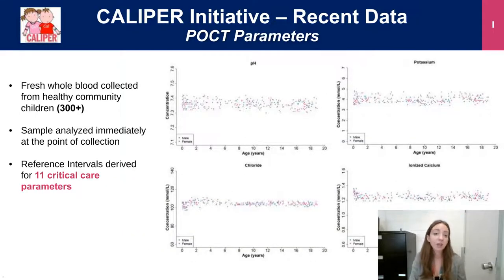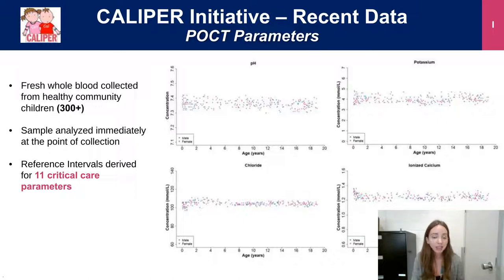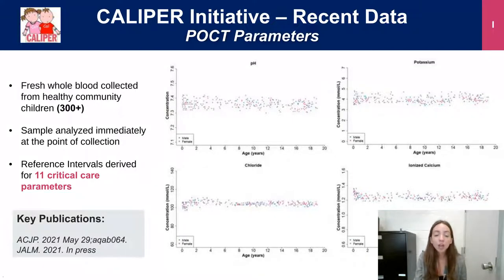Another gap we identified is point-of-care testing, which is coming into prominence in pediatric healthcare institutions due to low sample volumes required, rapid test turnaround time, and improvements in accuracy over the past decade. We used fresh whole blood collected from the community to establish reference standards for critical care parameters including pH, PO2, PCO2, electrolytes, and metabolites such as glucose and lactate. We brought point-of-care instruments—including the Radiometer ABL-90 and various glucometers—to the community for testing at the point of collection. This resulted in two publications establishing reference standards for 11 critical care parameters.